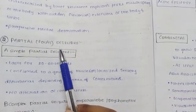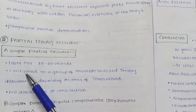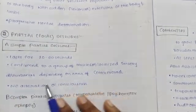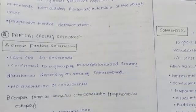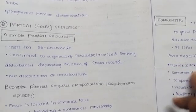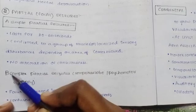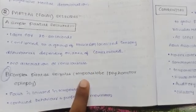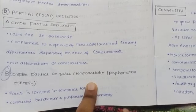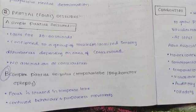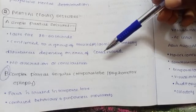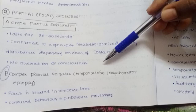Partial or focal seizures involve only one part of the brain. They are simple and complex. Simple partial seizures: no loss of consciousness, last for 20 to 60 seconds, no alteration of consciousness. Complex partial seizures are definitely temporal — the temporal cortex is involved, also called psychomotor epilepsy. The temporal lobe controls smell, taste, memory, limbic activity, and sexual activity.